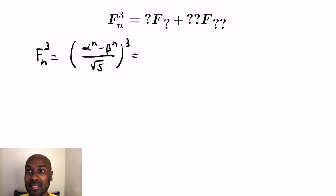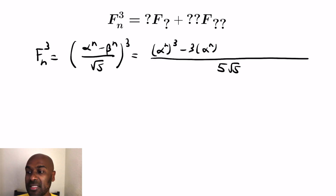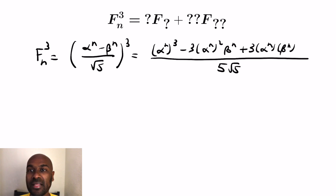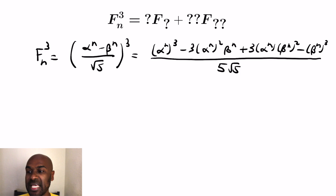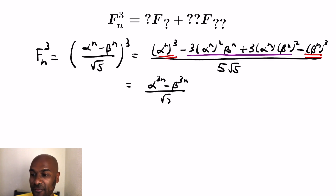So let's actually expand this as a cube. The bottom will have (√5)^3, which is 5√5. Then the top expands explicitly: we get alpha^(3n) minus 3·alpha^(2n)·beta^n plus 3·alpha^n·beta^(2n) minus beta^(3n). What we want to do is group things together based on the exponents so we can write them as Fibonacci numbers. If we group the red-underlined terms together and the purple-underlined term together, we get (alpha^(3n) − beta^(3n))/√5, and we'll bring the 1/5 out.